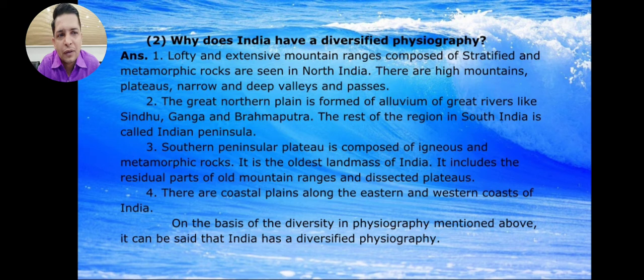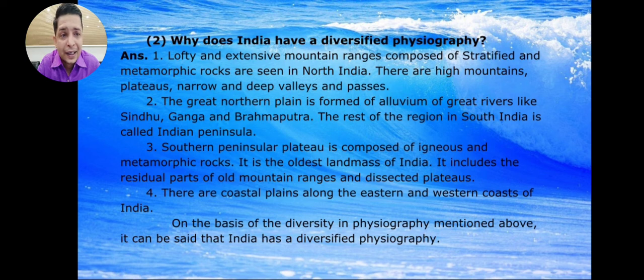A great northern plain is formed of the alluvial deposits of great rivers like the Sindhu, Ganga and Brahmaputra. The rest of the region in south India is called the Indian Peninsula.